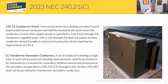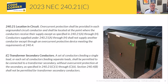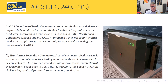240.21 is the location for overcurrent devices. Part A talks about branch circuit conductors, B talks about feeder taps — which is a common application for our interconnection methods covered in 705.12. Part C is talking about transformer secondary conductors. What this section says is that the protection doesn't necessarily have to be right at the transformer itself — similar to what we do with taps, we can have some distance before the overcurrent protection device, and we have to meet the requirements of C1 through C6.